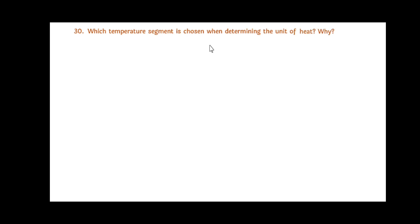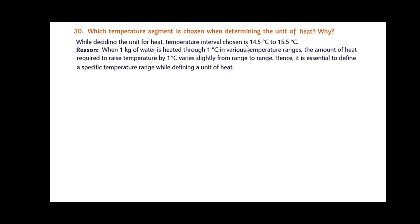Which temperature segment is chosen when determining the unit of heat and why? While deciding the unit of heat, temperature interval chosen is 14.5 degrees Celsius to 15.5 degrees Celsius. The reason for this is when 1 kg of water is heated through 1 degree Celsius in various temperature ranges, the amount of heat required to raise the temperature by 1 degree Celsius varies slightly from range to range. Hence, it is essential to define a specific temperature range while defining the unit of heat.